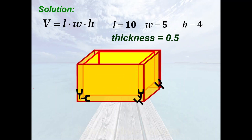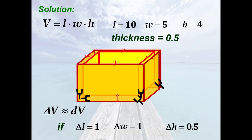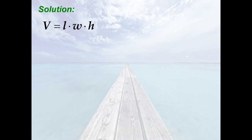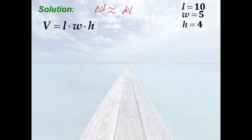Remember that to approximate the change in volume, we solve for the total differential of V, because delta V is approximately equal to dV. Notice that if the thickness of the box is 0.5, then the change in height is also 0.5, while the change in length and width is 1. So we have: delta L equals 1, delta W equals 1, delta H equals 0.5. Our working equation is V equals L times W times H, with L equal to 10, W equal to 5, and H equal to 4.